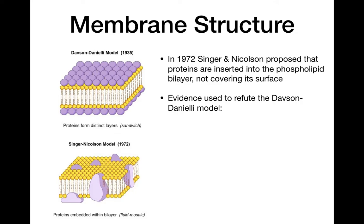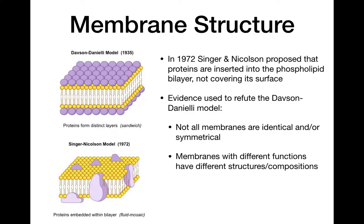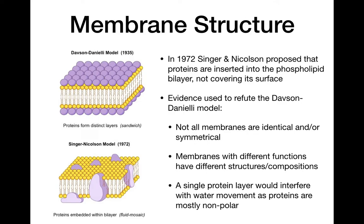The evidence they used came from microscopy, from electron micrograph images, and included things like: not all membranes are identical or symmetrical. If it was a sandwich, the protein structure would hold it in a much more permanent shape. Different functions have different structures and compositions, so there needs to be flexibility in the general membrane structure to allow for specialized functions. Also, a single protein layer would interfere with water movement, as proteins are mostly nonpolar. If we have regions of just straight phospholipid, water can pass through quite easily, with proteins distributed throughout.